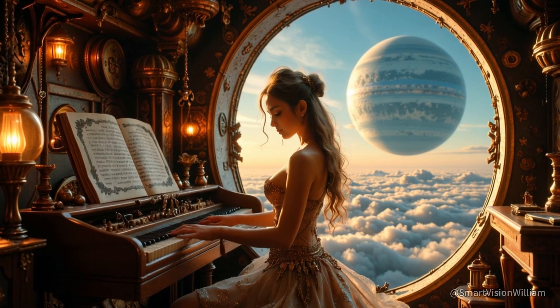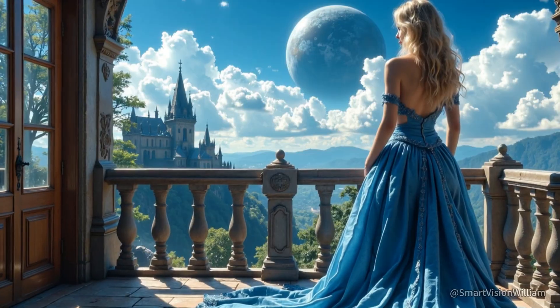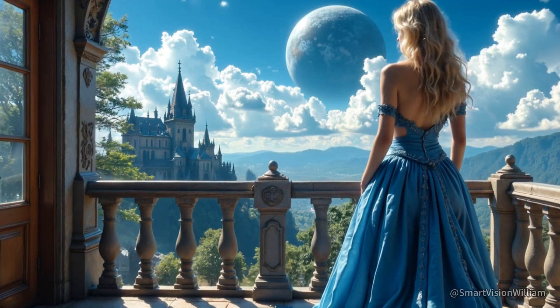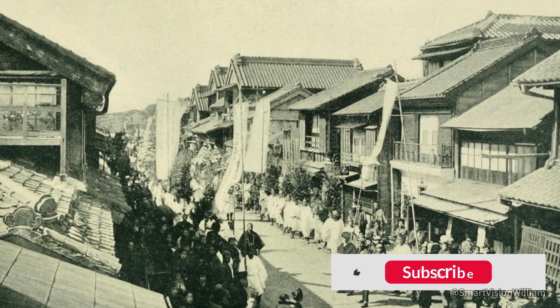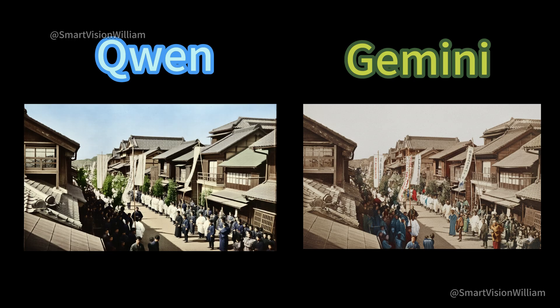The sixth scenario is image restoration and colorization — repairing old photos, adding color, and enhancing details in blurry photos. I input an old photo of Japan from the early 20th century with a prompt to restore the image and enhance details. QWIN was excellent in detail recovery and color naturalness, showing a significant improvement. NanoBanino was also decent in some restoration tasks, but the overall feeling was slightly inferior.